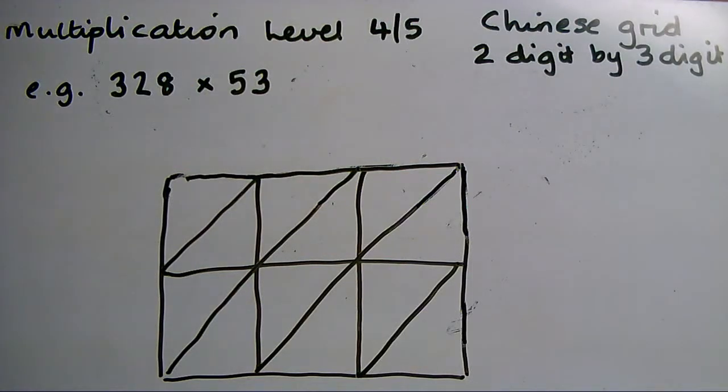One problem with multiplying using a normal grid method is keeping control of the zeros. I'm going to show you now a method that a lot of students find easier where we don't need to worry about the zeros in the number.